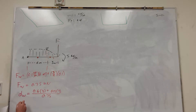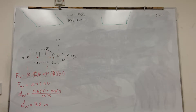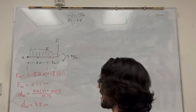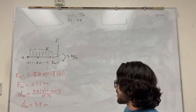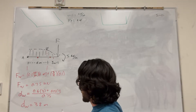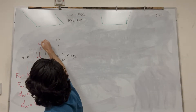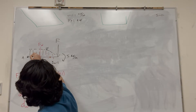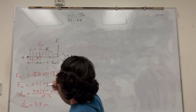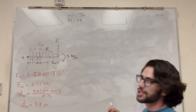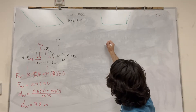You get that the distance is equal to 3.8 meters. So now we have a force of 0.75 kilonewtons acting at 3.8 meters from A. Let's go ahead and do part A, which asks for the vertical and horizontal components at A.